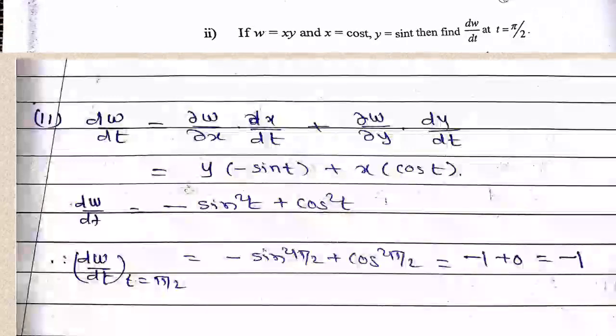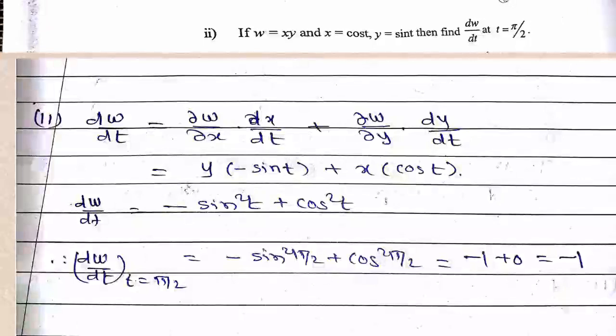Second sub-question: if w = xy, x = cos t, y = sin t, find dw/dt at t = π/2. Using the chain rule: dw/dt = (dw/dx)(dx/dt) + (dw/dy)(dy/dt) = y(-sin t) + x(cos t). Substituting x and y: dw/dt = -sin²t + cos²t. Therefore dw/dt at t = π/2 equals -sin²(π/2) + cos²(π/2) = -1 + 0 = -1.